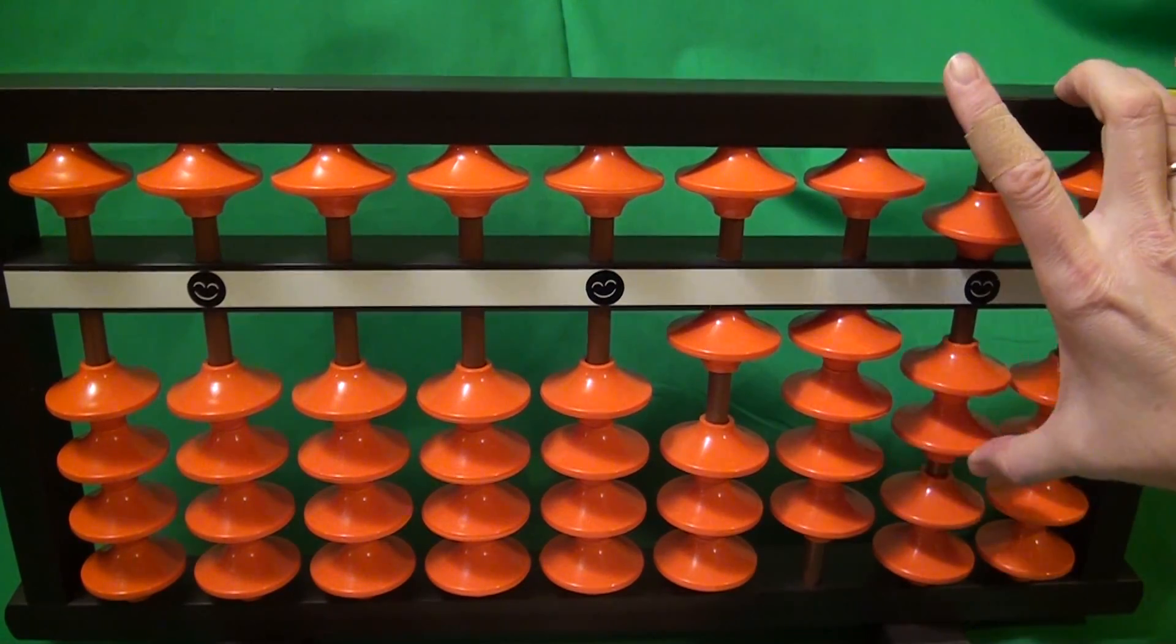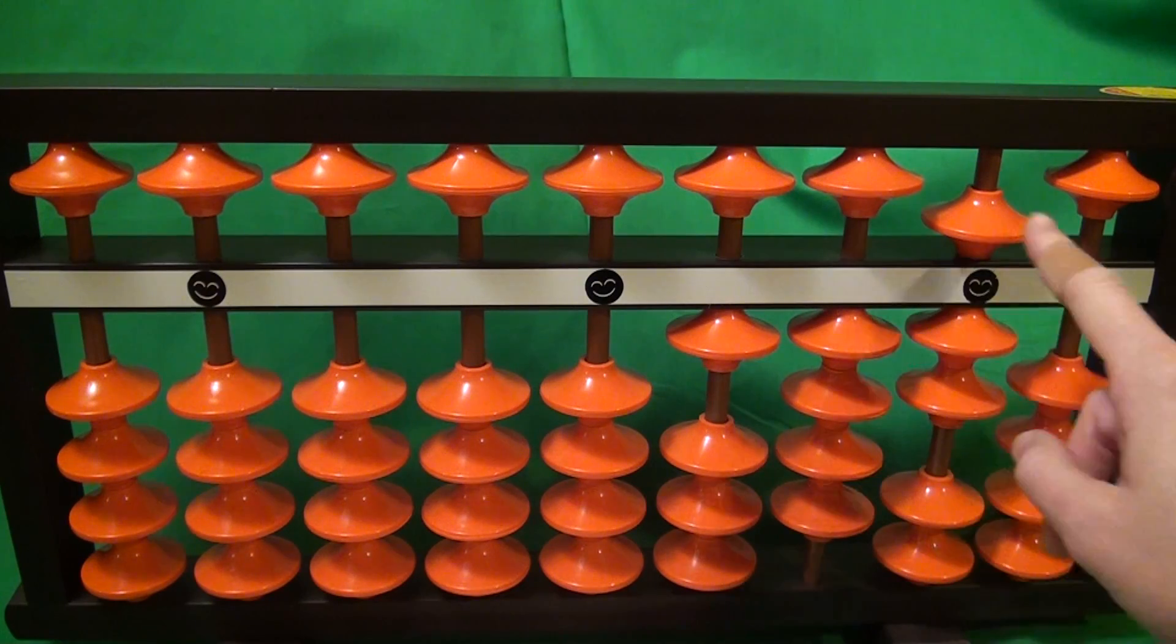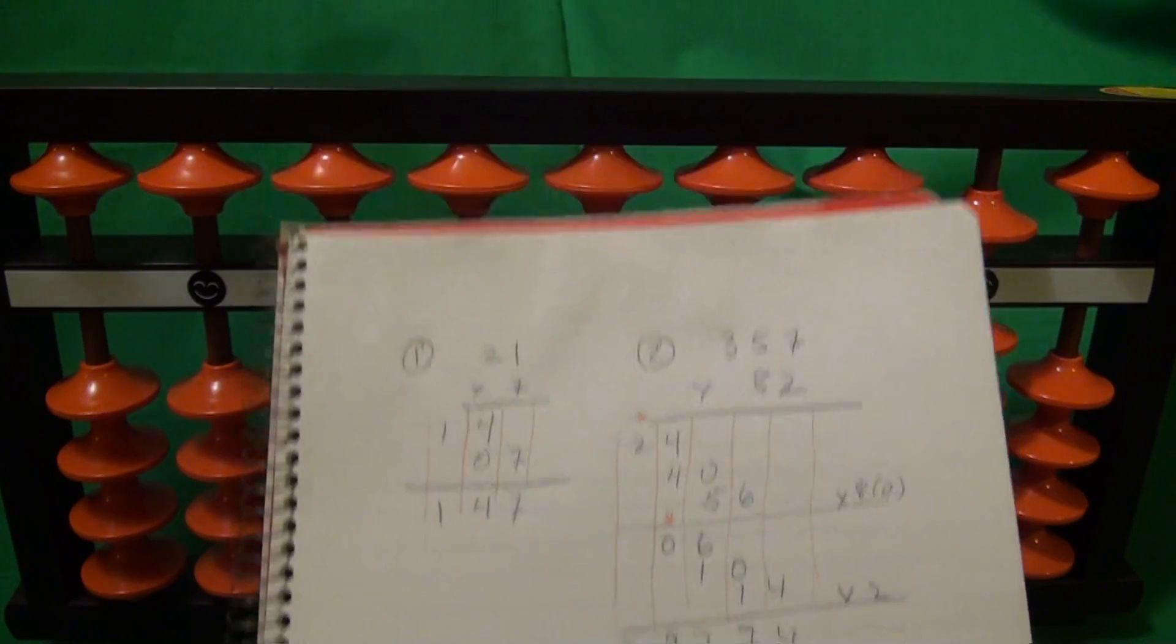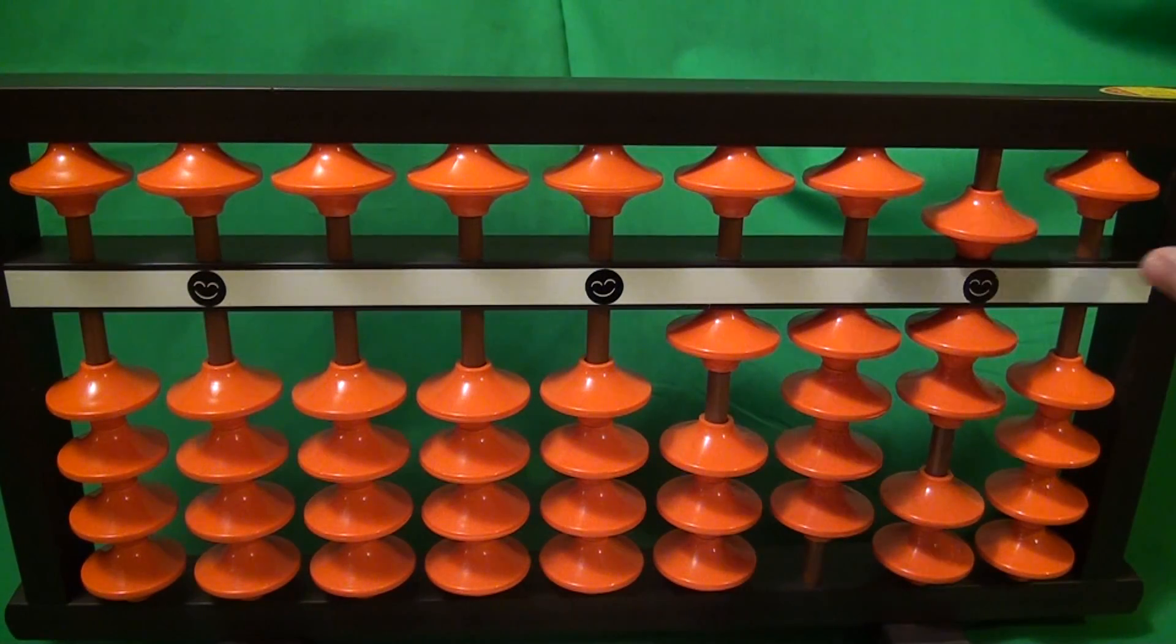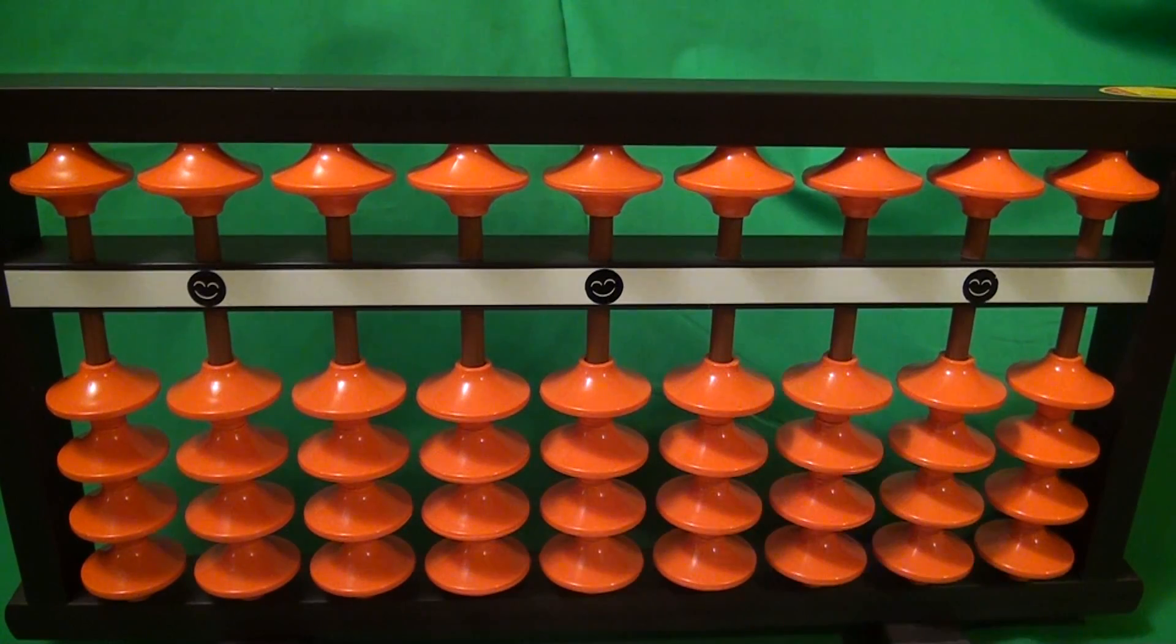So a 5 and a 2. And our answer is 147, which is what we got with number 1. So that was relatively simple. Let's take a look at example number 2. A little bit more difficult.